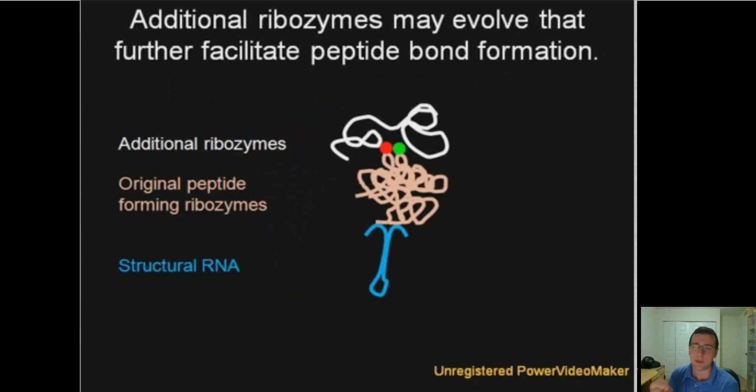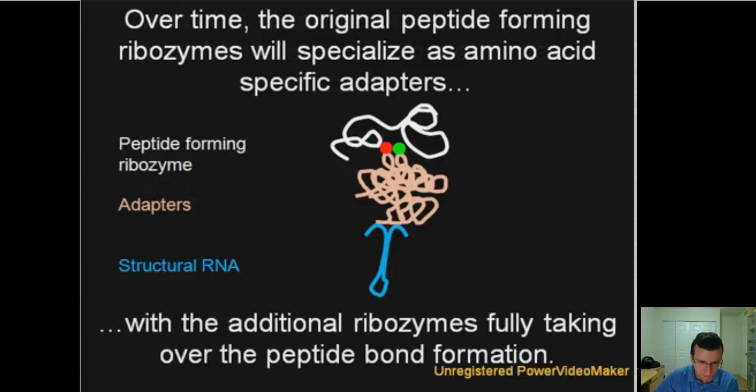Later on, additional ribozymes may have evolved to further facilitate the formation of the actual bond between the amino acids. And then with these additional ribozymes taking over the role, the original ribozymes would now specialize for specific amino acids. And then the structural RNA would specialize to attach itself to specific adapters.